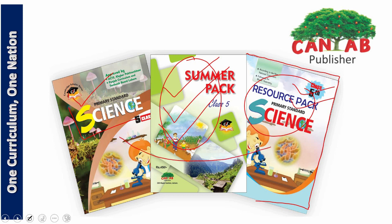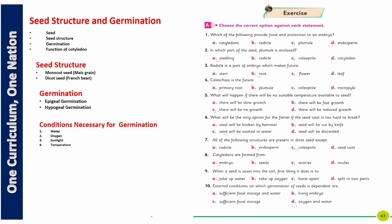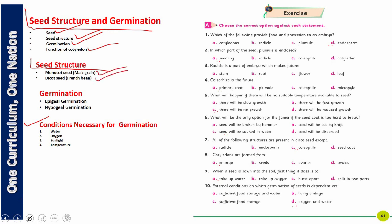Dear students, we have finished Chapter 3: Seed Structure and Germination. In this chapter, we studied seed structure, germination, the function of the cotyledon, and conditions necessary for germination. In seed structure, we saw monocot and dicot. In germination, there was epigeal germination and hypogeal germination. For conditions necessary, we saw that water, oxygen, sunlight, and temperature are all very important.